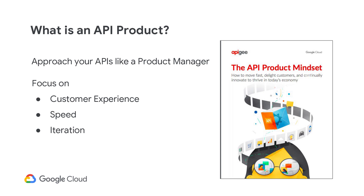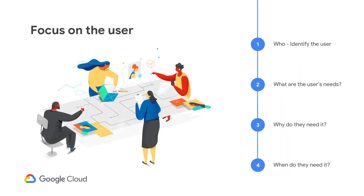To understand the need for an API product, you must first understand the user. Let's start with asking four key questions centered around the user of your API: Who is the user? What are the user's needs? Why do they need it? When do they need it? The user of your API is an application developer who will create applications using your API — also known as the API consumer.